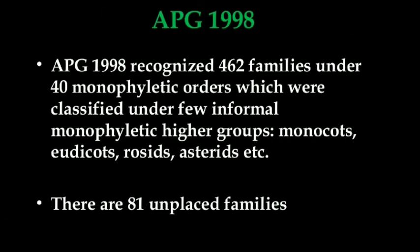In APG 1998, 462 families under 40 monophyletic orders were recognized, classified under a few informal monophyletic higher groups such as monocots, eudicots, rosids, asterids, etc. There were 81 unplaced families as per APG 1998.